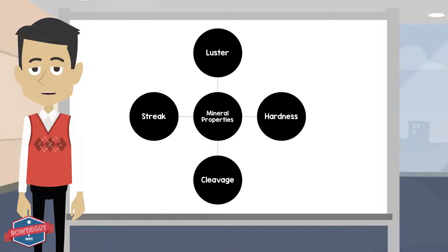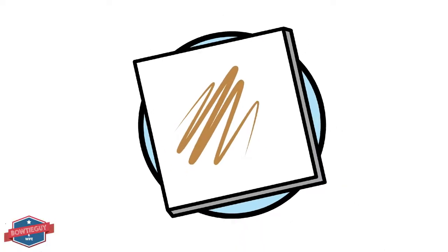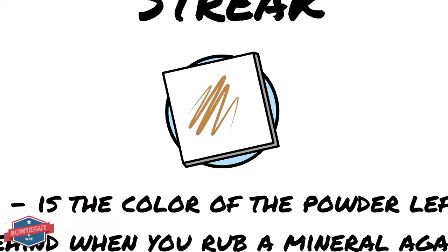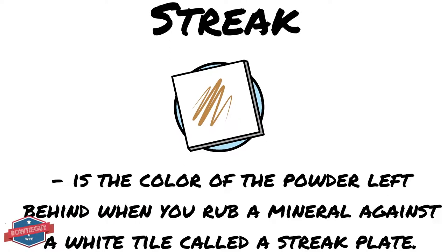There are many distinctive features of minerals, but we're just going to talk about four in this particular video. We're going to talk about streak, luster, hardness, and cleavage. Streak is the color of the powder left behind when you rub a mineral against a white tile called a streak plate.